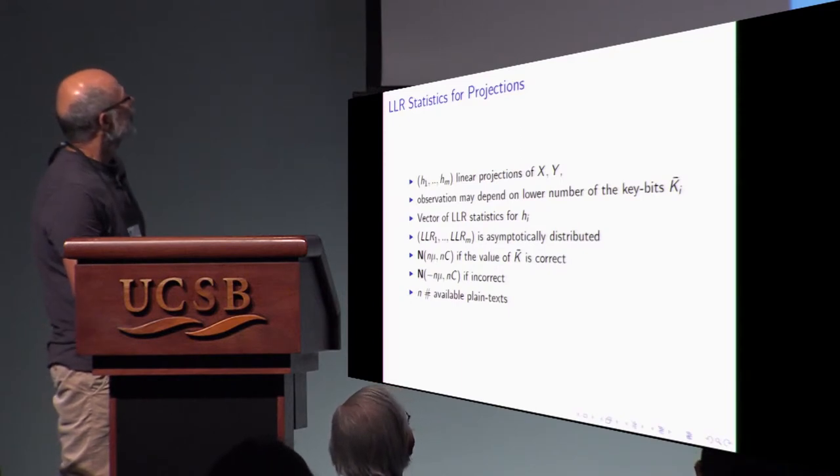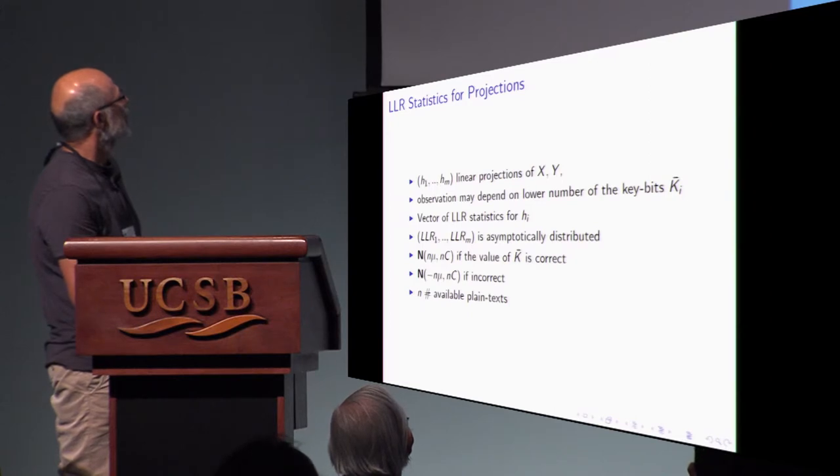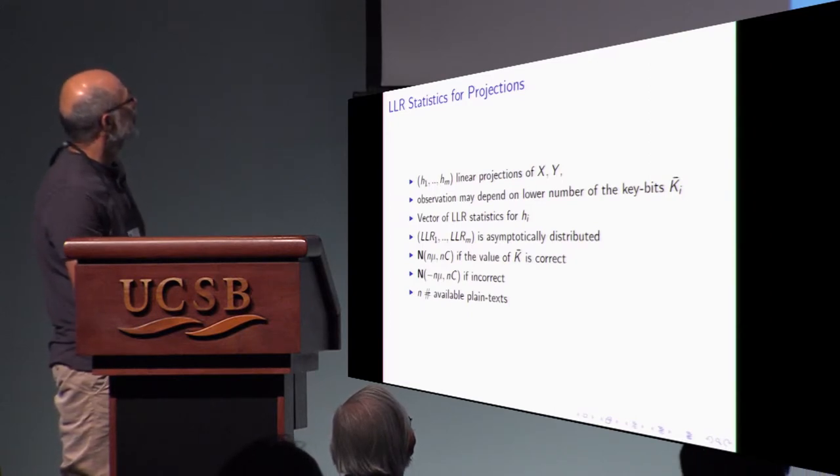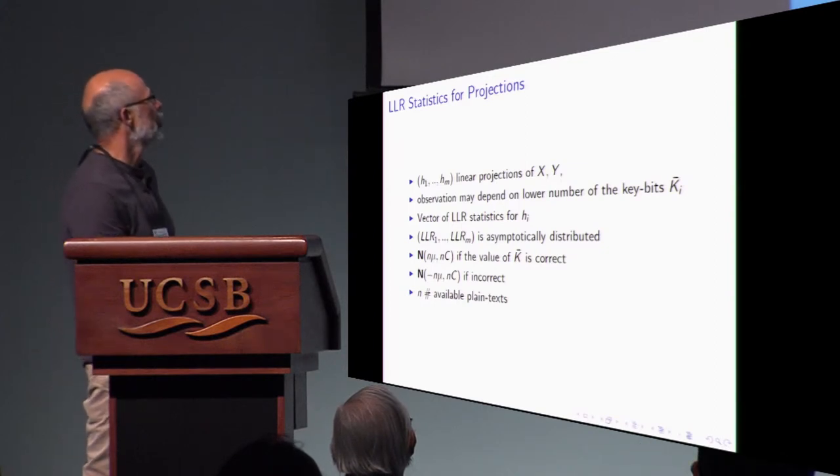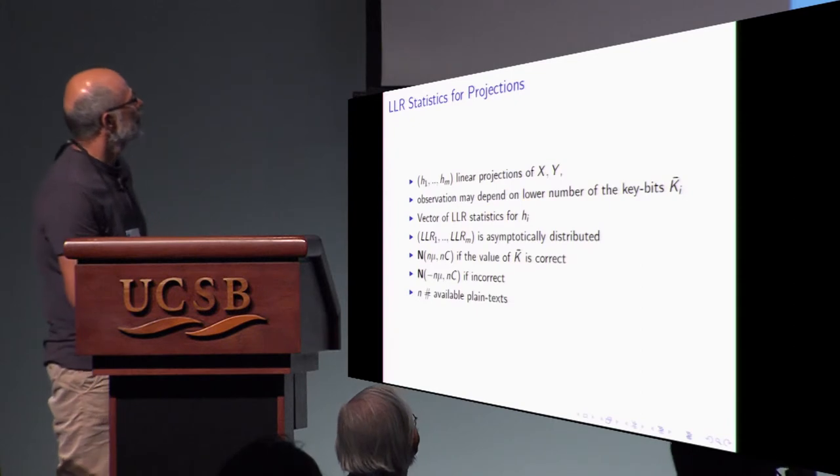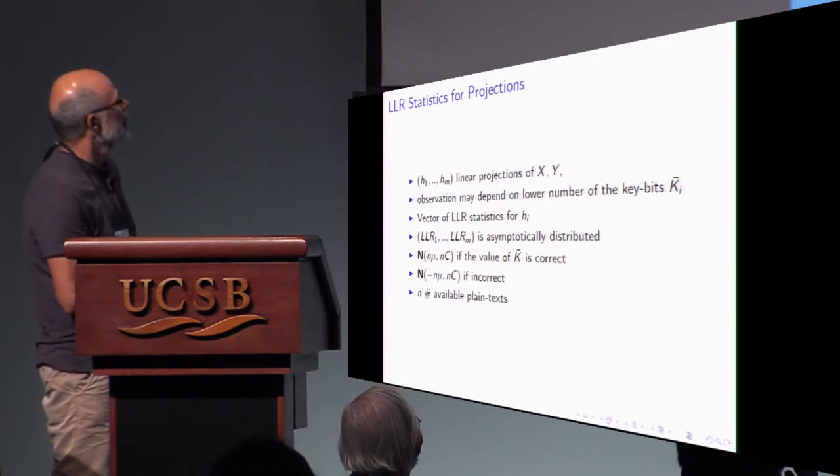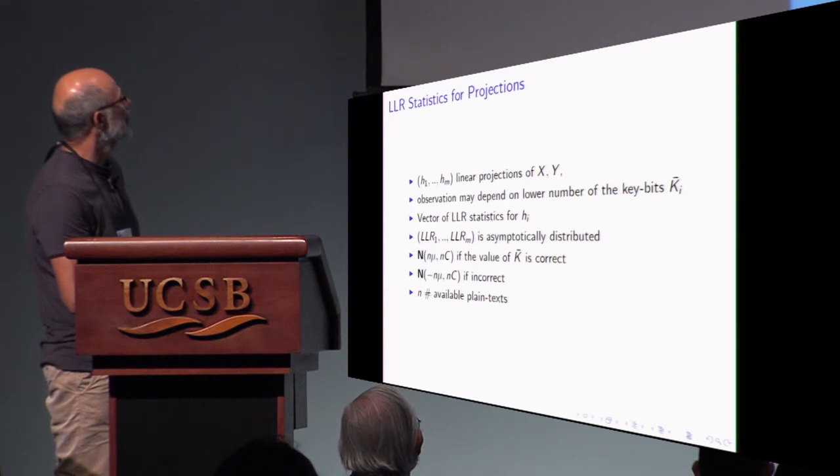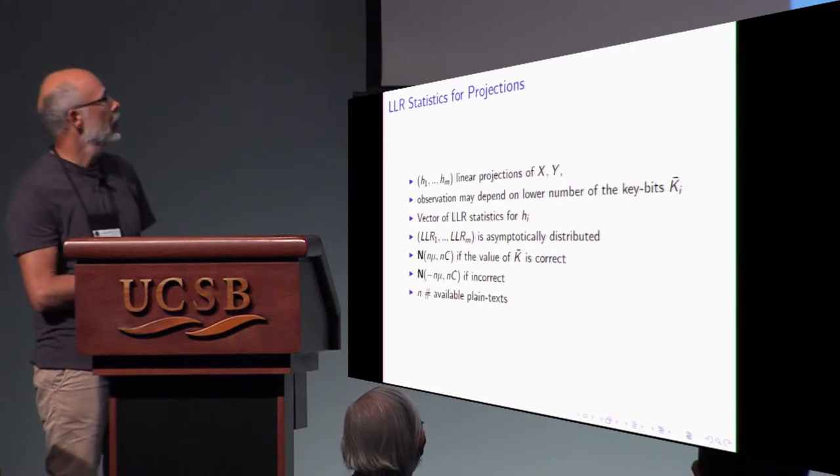So we are able to construct the vector of logarithmic likelihood ratios for each projection. And we know distribution of this vector asymptotically. If value of key is correct, this is a priori distribution. This vector distributed as a multivariate normal vector with parameters which are easy to compute.